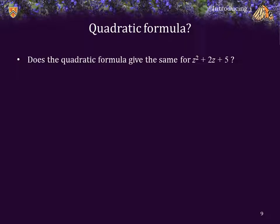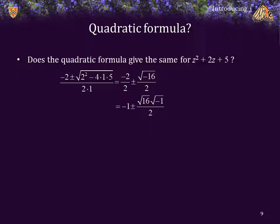Does the quadratic formula give the same roots for z squared plus 2z plus 5? Plugging in those values and simplifying, we get negative 2 over 2 plus or minus the square root of negative 16 over 2. The first term simplifies to negative 1, and we can write the square root of negative 16 as the square root of 16 times the square root of negative 1. The square root of 16 is 4, divided by 2 is 2. So we get that the roots are negative 1 plus or minus 2 times the square root of negative 1, which matches what we substituted in.